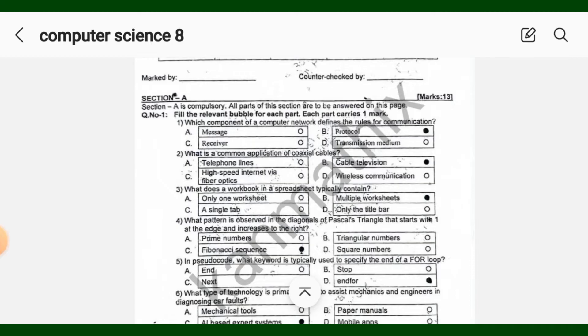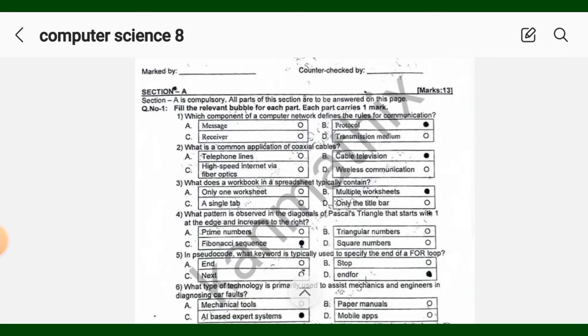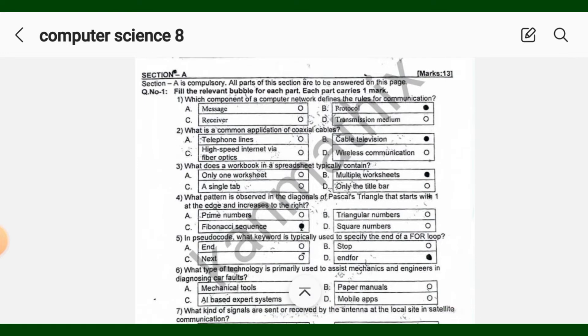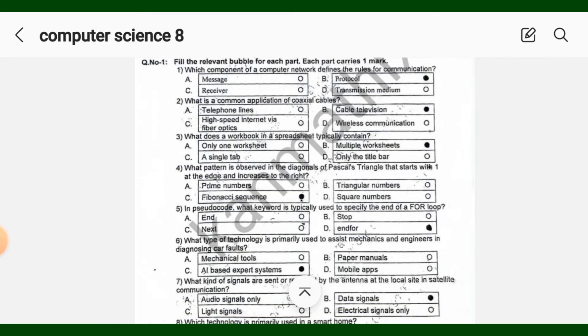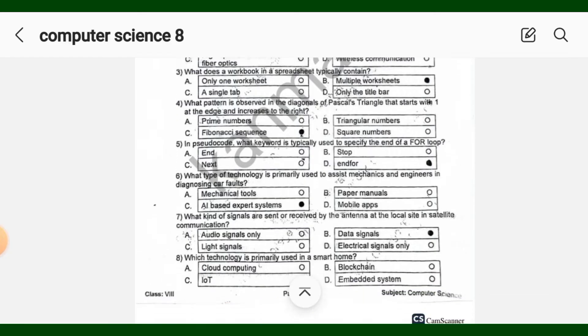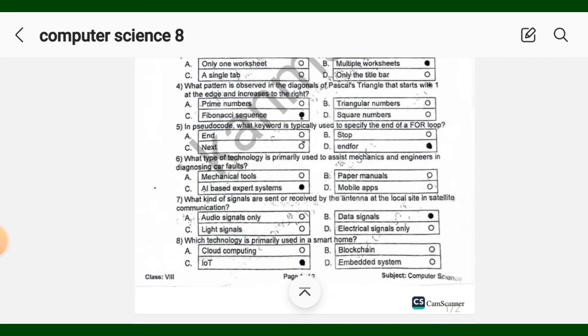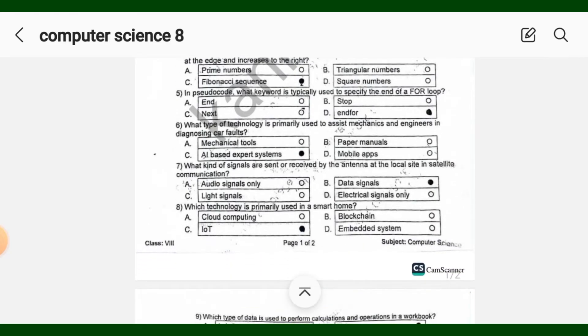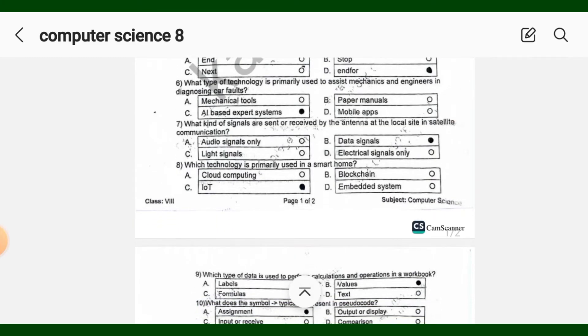MCQ number 1, correct option is B. MCQ number 2, correct option is again B. MCQ number 3, correct option is again B. MCQ number 4, correct option is C. MCQ 5, correct option is D. MCQ 6, correct option is C. MCQ 7, correct option is B. MCQ 8, correct option is C.